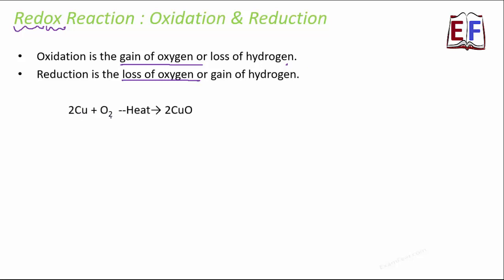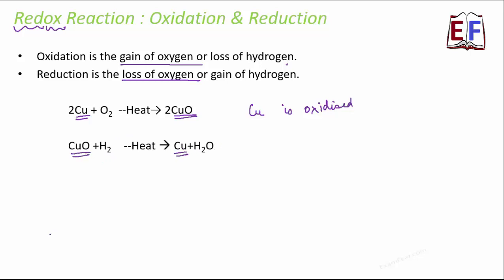Take this example: copper plus oxygen gives CuO, that is copper oxide. Here copper is gaining oxygen, so copper is oxidized. Now take another example: copper oxide plus hydrogen gives copper plus H2O. Here copper oxide is changing to copper, meaning copper is losing oxygen, so copper is reduced.